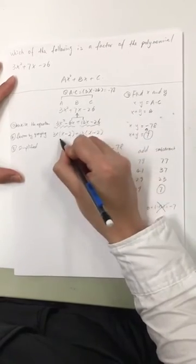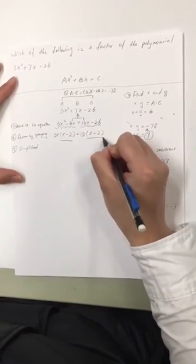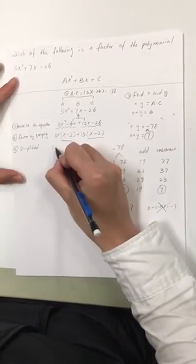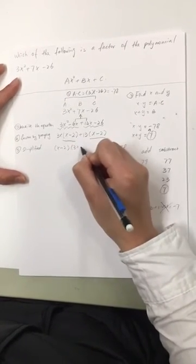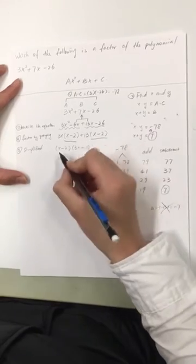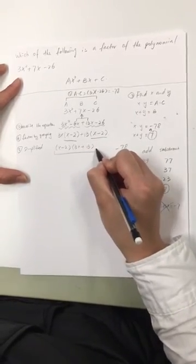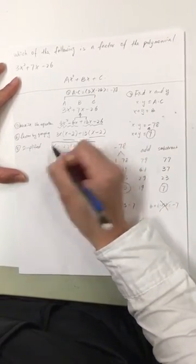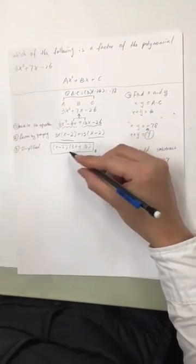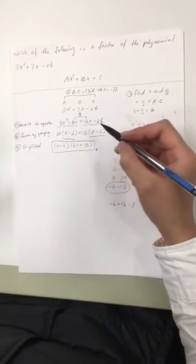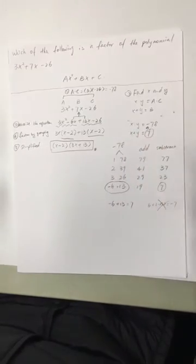Next, simplify. The common factor is x minus 2 here. So x minus 2. So 3x left and 13 left. This is our solution. So they are both factors of the polynomial.